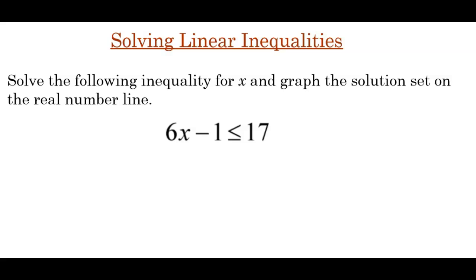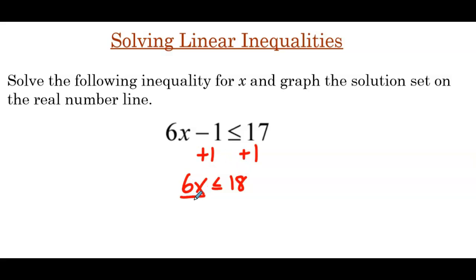We're going to use the same steps that we would for solving an equation to solve an inequality. We'll start by adding 1 to both sides of the inequality, so we have 6x is less than or equal to 18. Then we divide both sides by 6, and we have x is less than or equal to 3.